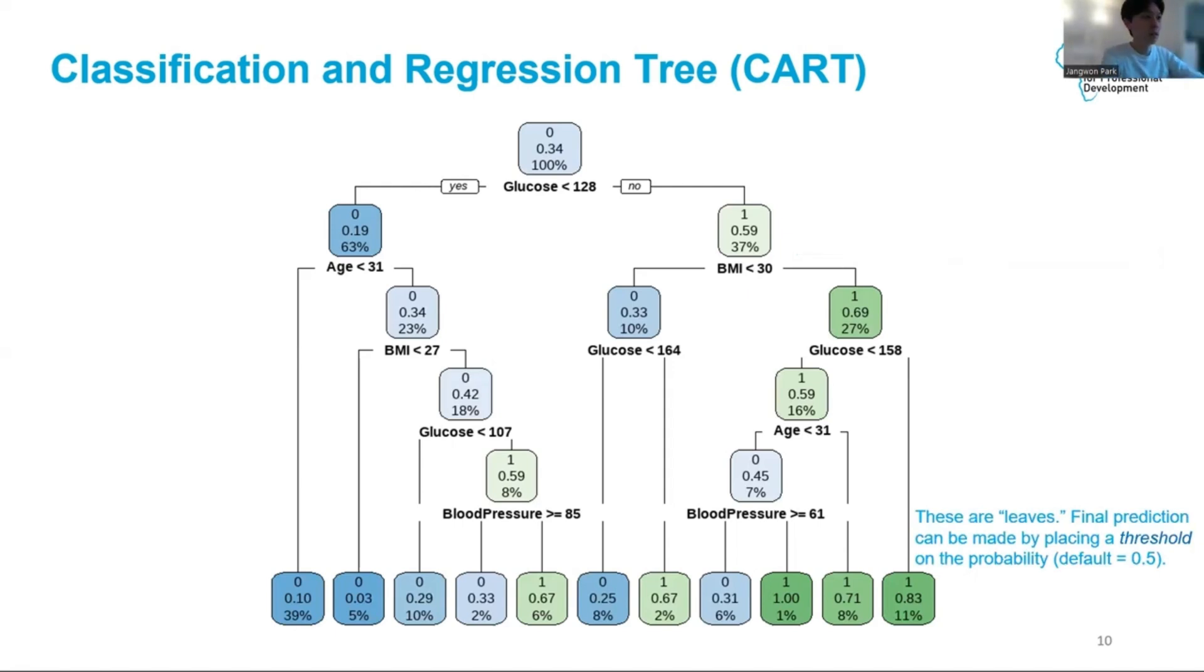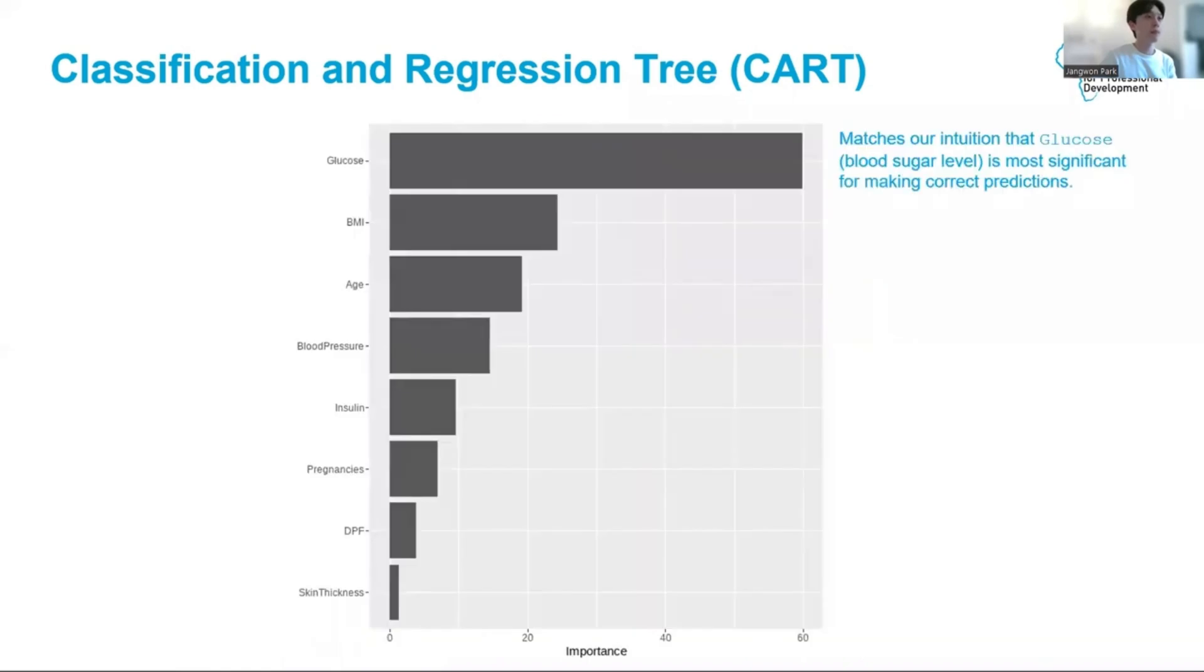When we continue until the end, we reach the leaves of the tree. The final prediction can then be made by placing a threshold on the probability. The default predict threshold is 0.5. This implies that if the predicted probability is greater than 0.5, then all the data points within that node will be predicted as class one. Technically, this threshold can be a modeler's choice too, but in this lesson we will not touch this hyperparameter for simplicity.